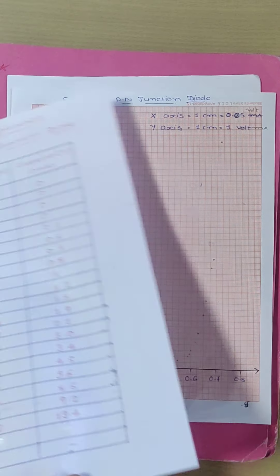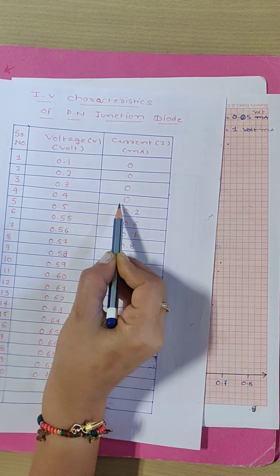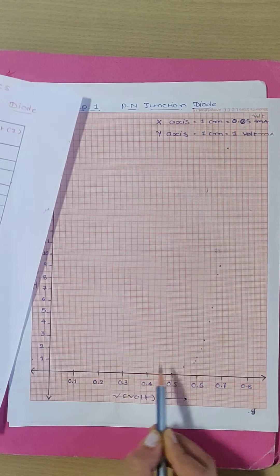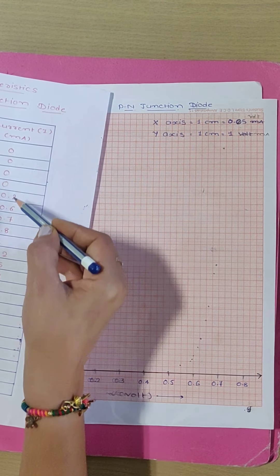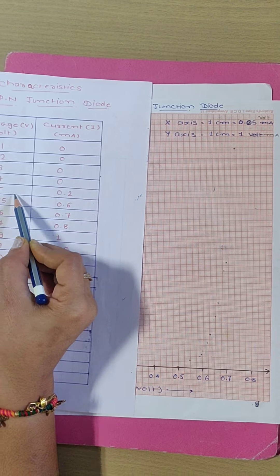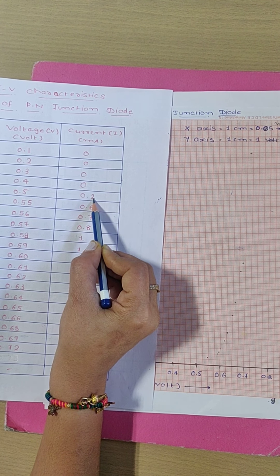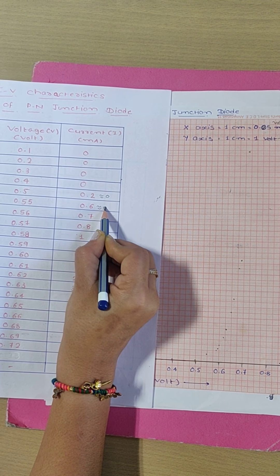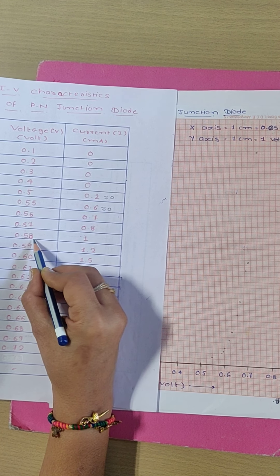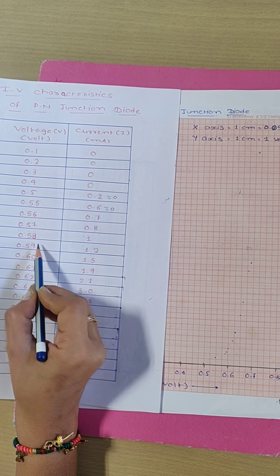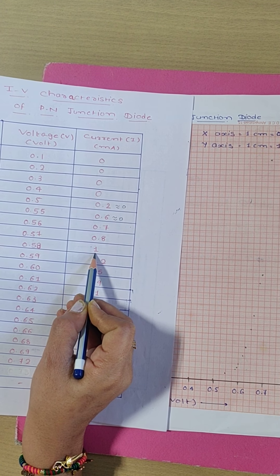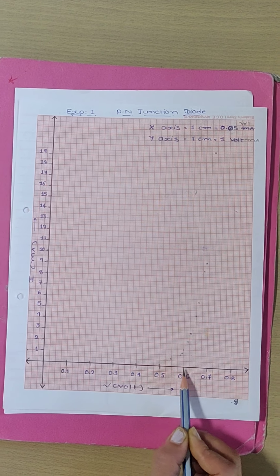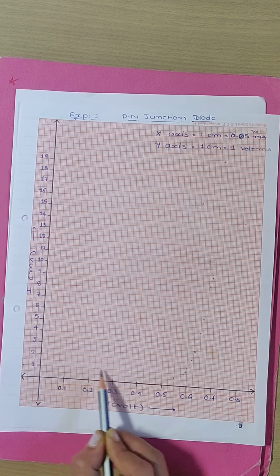Now, based on the readings of current for various voltage values, I have placed the points on the axes. For example, initially at 0.5 volt the current starts and is almost 0.2, which is considered approximately 0. The current exactly starts at about 0.58 volt, where the value of the current is 1 milliampere. So near 0.58 volt, the current is 1 milliampere.